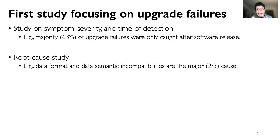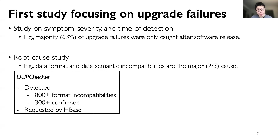We then study and categorize the root causes of upgrade failures. For example, we found that two-thirds of upgrade failures happen because two software versions hold incompatible assumptions about data formats or data semantics. We further built a static checking tool targeting data format incompatibilities, which finds over 800 data format incompatibilities with more than 300 confirmed.